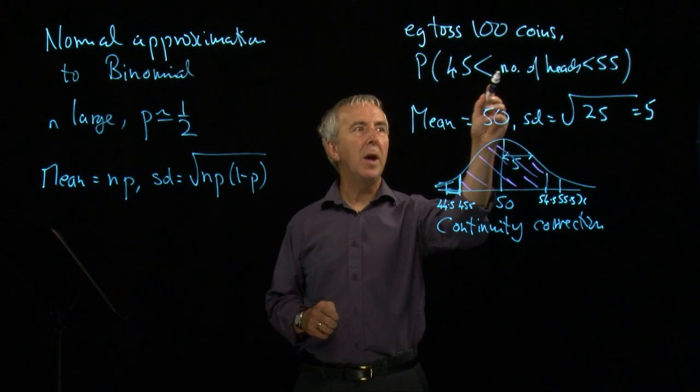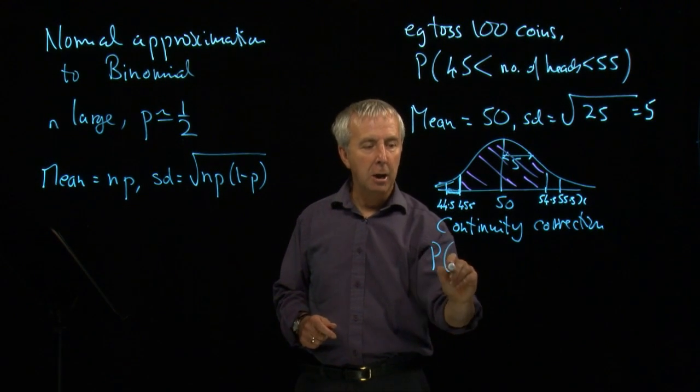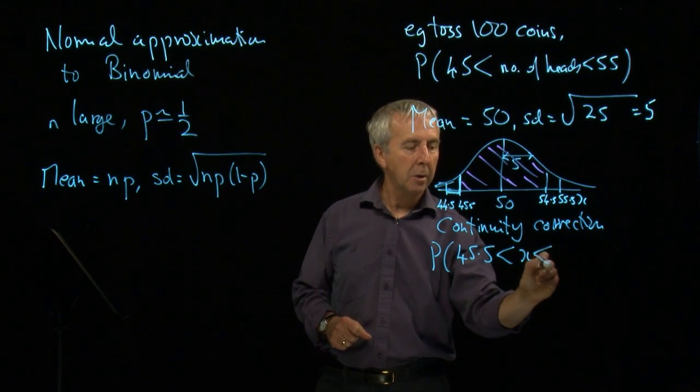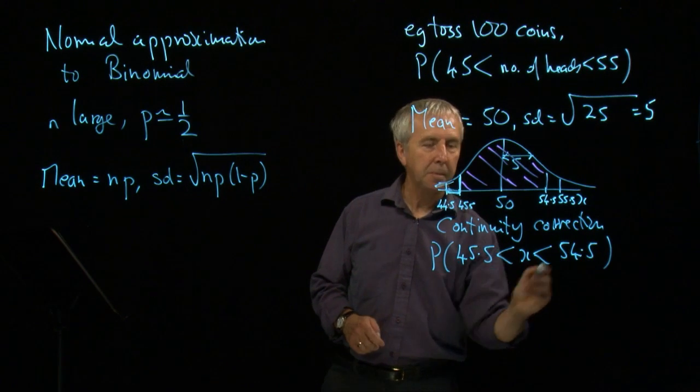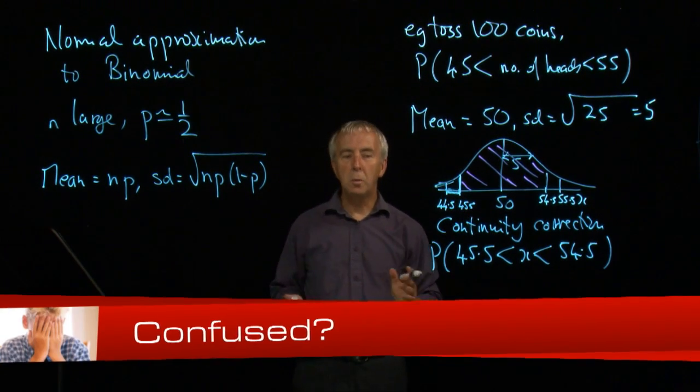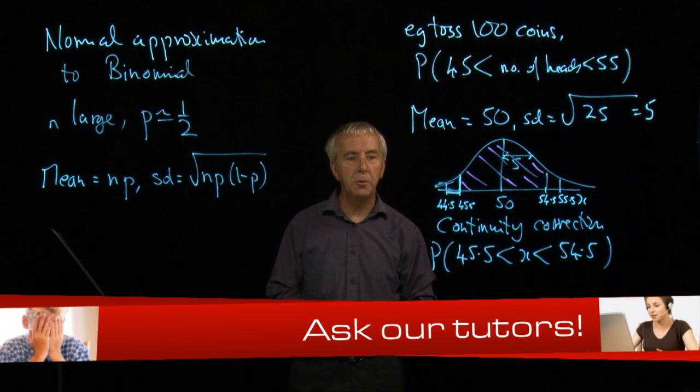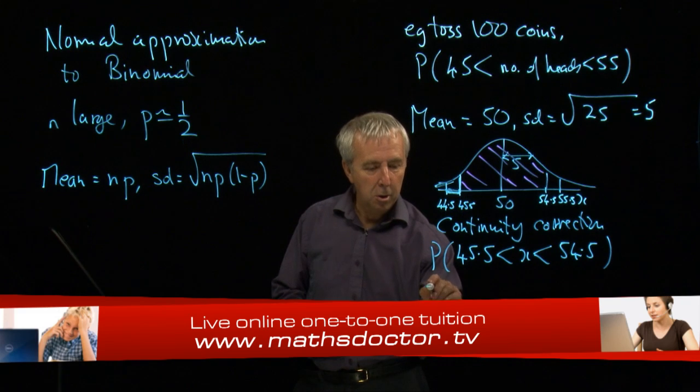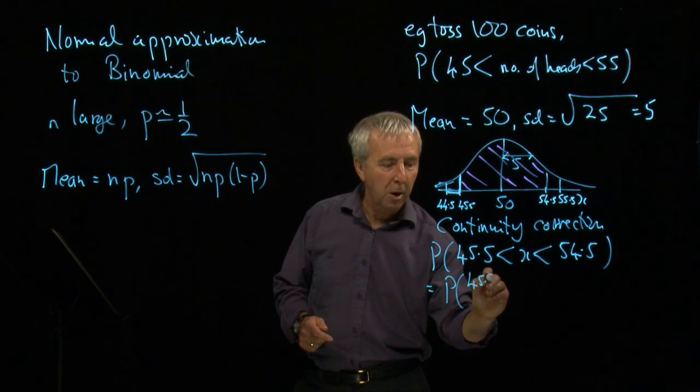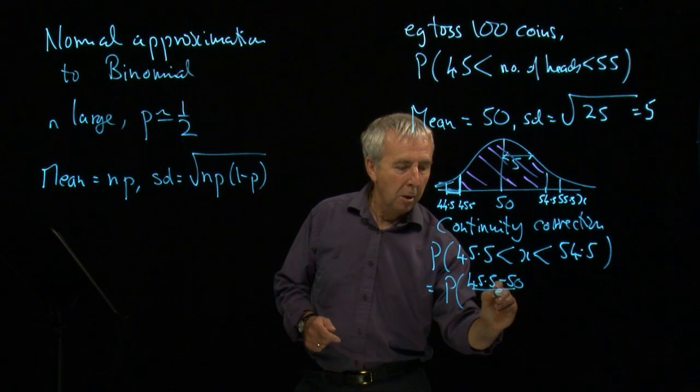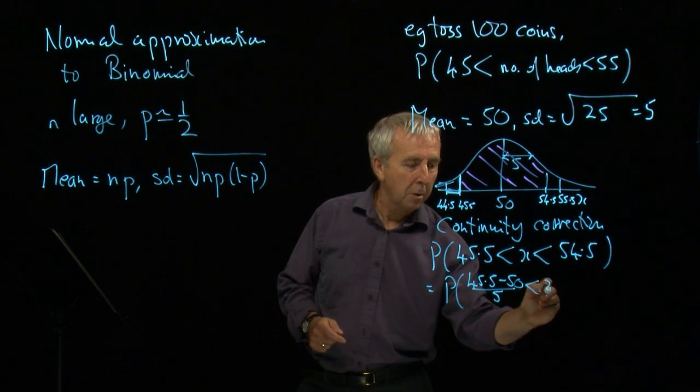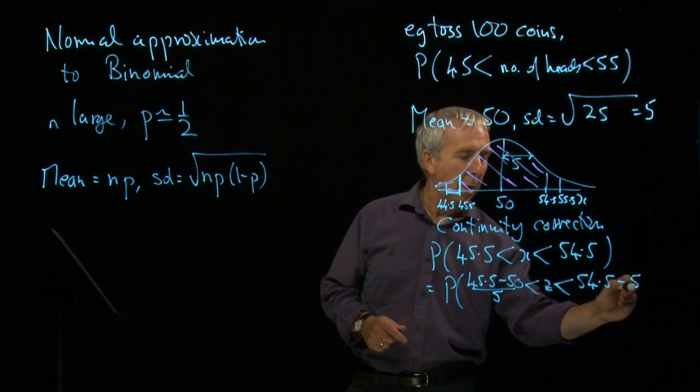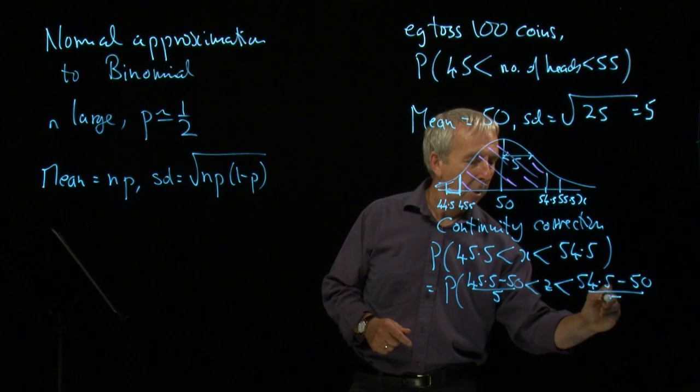So we want, in fact, our number of heads, x now, has to be between 45.5 and 54.5. So we convert to our standard normal variable z by subtracting the mean, dividing by the standard deviation. So I do 45.5 take away 50 divided by 5 less than z less than 54.5 minus 50 divided by 5.